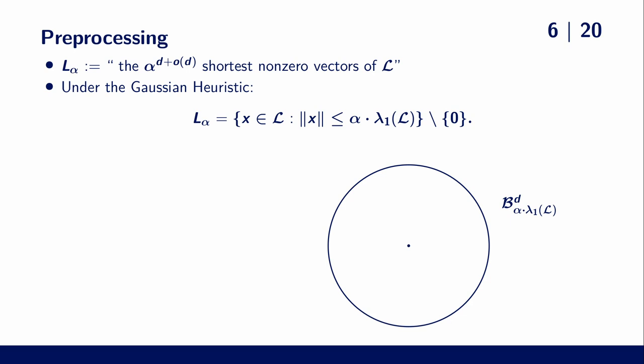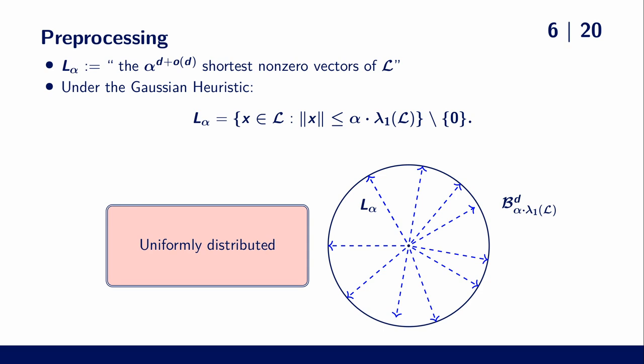More importantly, under this heuristic, we can assume that the vectors are uniformly distributed over this d-dimensional ball. This distribution allows us to actually analyze the success probability.